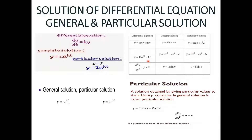More examples of general and particular solutions: if y = 5x³ − 2x² + C is the general solution, then y = 5x³ − 2x² + 5 is a particular solution. If y = A·sin x is the general solution, then y = 5·sin x is the particular solution. A particular solution is obtained by giving specific values to the arbitrary constants in the general solution.